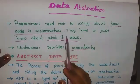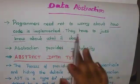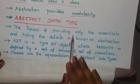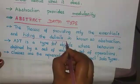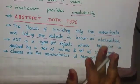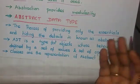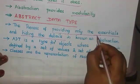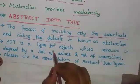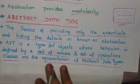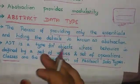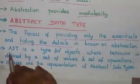We know what the ATM machine does, but we don't care about how it works internally. This is data abstraction. The definition of abstract data type: the process of providing only essentials and hiding the details is known as abstraction. It mentions what operations are to be performed, but not how those operations are implemented. It does not specify how data will be organized in memory or what algorithms will be used.